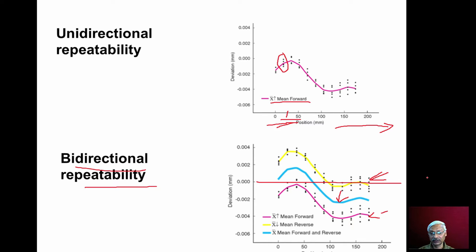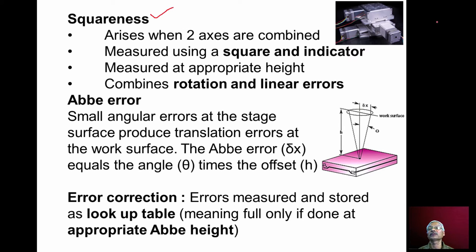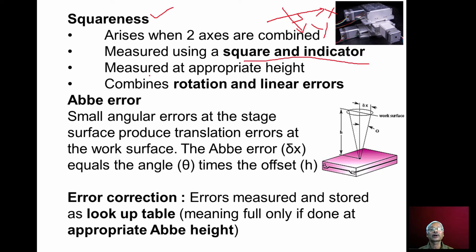There can also be squareness errors. For an XY table, the x-axis movement and y-axis movement — when the table moves, whether the movement is 90 degrees or not, whether it is square or not, can be checked by using squares and dial indicators. Squareness is basically the combination of rotational errors and linear errors.